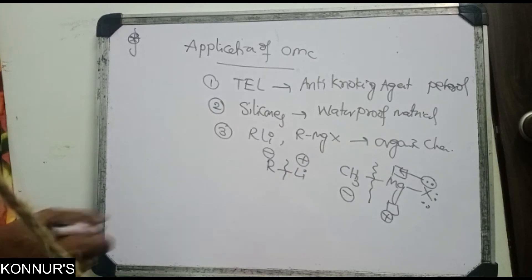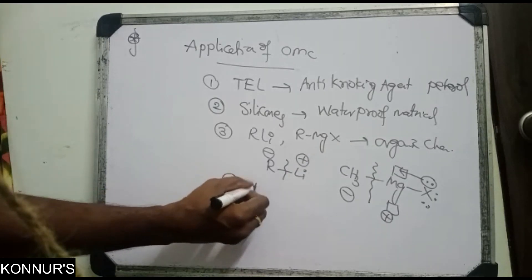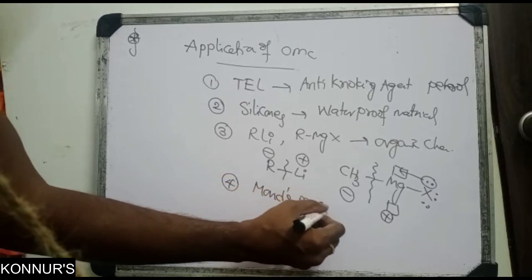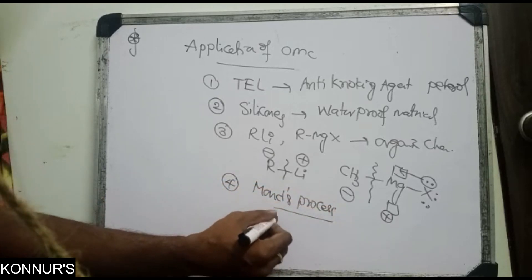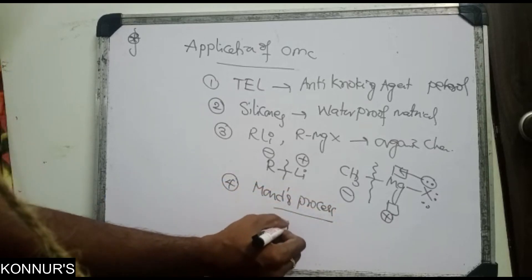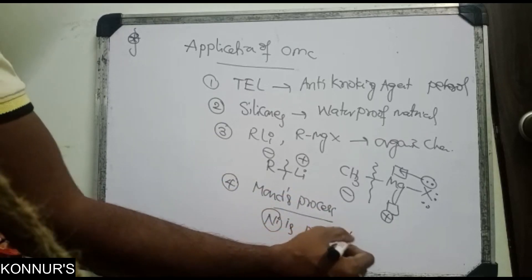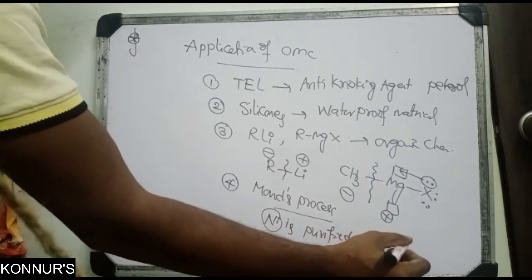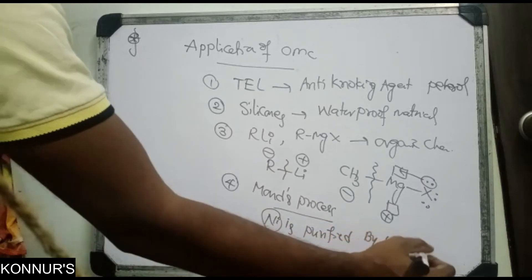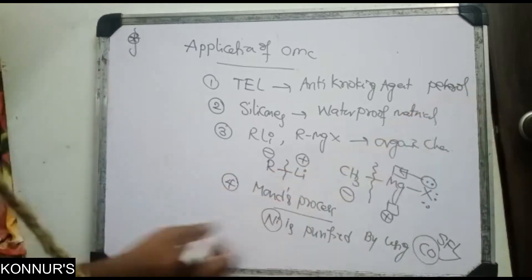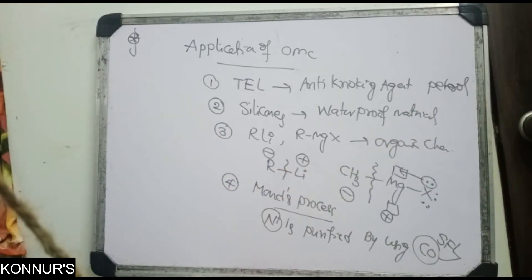Nickel is purified by the Mond process using carbon monoxide — carbon monoxide is a strong field ligand. This forms the Ni(CO)4 complex, and this is the Mond process application of organometallic and complex compounds.